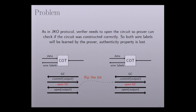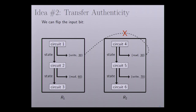As you can see in these two proofs, the prover can successfully cheat by just flipping a bit. So we cannot directly reuse the wire labels — we need somehow to transfer the authenticity.